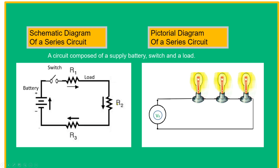Our load here is resistors: R1, R2, and R3. On the other side, we have a pictorial diagram of a series circuit. This is our load — the lamp that is connected in series.